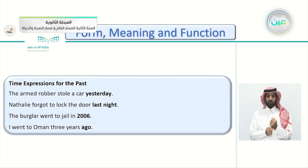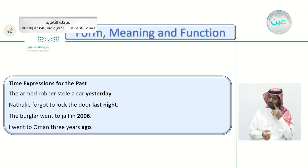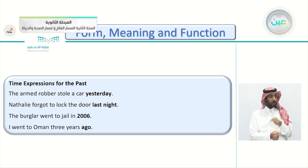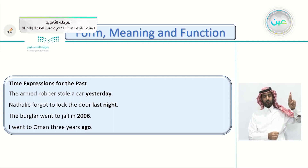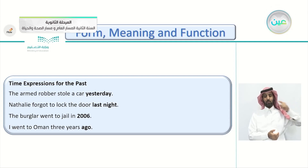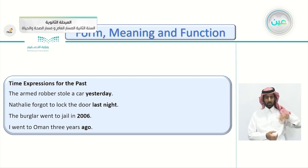Time expressions for the past signal when an event happened. 'The armed robber stole a car yesterday' — 'yesterday' tells us it's past. 'Natalie forgot to lock the door last night' — 'last night' tells us exactly when. 'The burglar went to jail in 2006' — pinpoints the exact time. 'I went to Oman three years ago' — 'three years ago' tells us it's in the past.